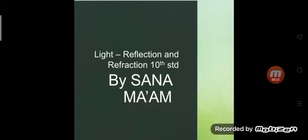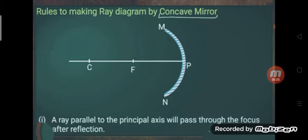Here is the first rule to make the ray diagram for the concave mirror. First of all we have to follow the rules and know which rules we can use to make ray diagrams. This is a common diagram of a concave mirror where I have shown all the rules, as I have shown in the spherical mirror.